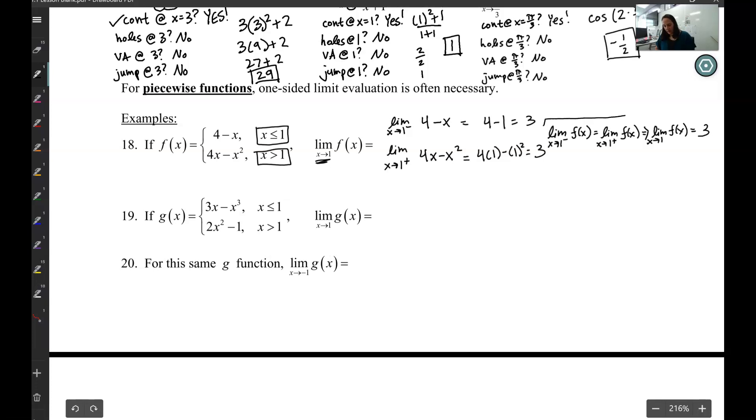Essentially what this says is because my left-hand side and my right-hand side are equal, then the limit is 3. So you check both sides. They're the same, so I know it's 3. It does exist.